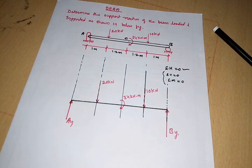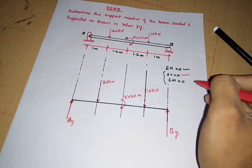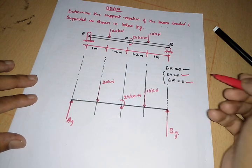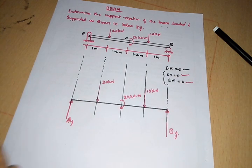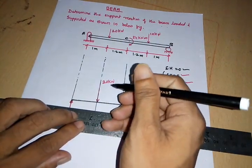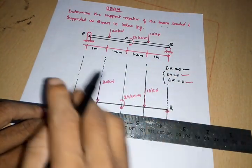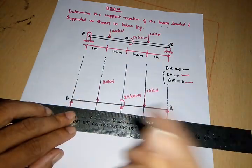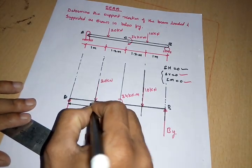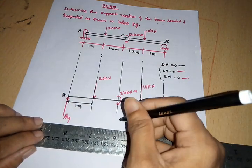Now I have to decide where to take the moment. The equilibrium equations are summation of V equals zero and summation of moment at any point equals zero. I have decided to take the moment at point A, so I need to find the distance between point A and all other forces and reactions. From point A to the first force it is 1 meter.